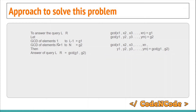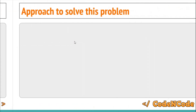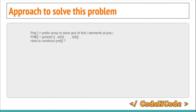We need to find the GCD of elements from 1 to L minus 1 in constant time. The range 1 to L minus 1 is basically a prefix, and R plus 1 to N is a suffix. So we are going to prepare a prefix GCD array and a suffix GCD array. The prefix array pre[i] stores the GCD of the first i elements. To get the GCD of the first L minus 1 elements, all you have to do is look up pre[L-1].